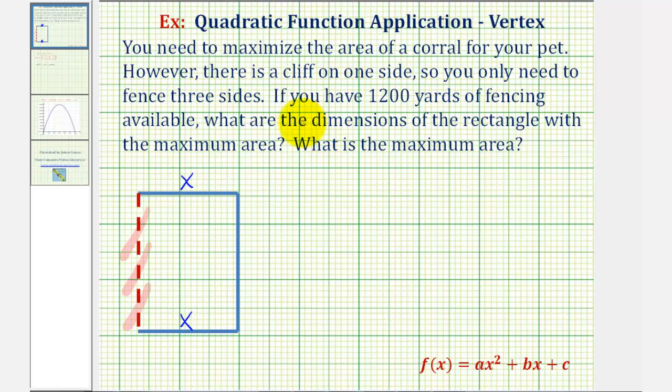And now because we have a total of 1,200 yards of fencing, the length of this side here would have to be the total length minus x, minus x, or 1,200 minus 2x. This length here is the total amount of fencing minus the lengths of the two sides here, which is represented by minus 2x.